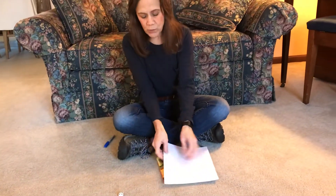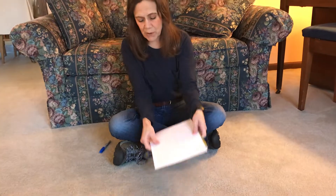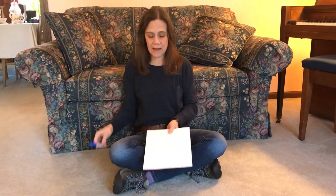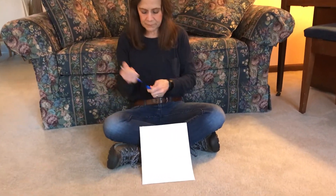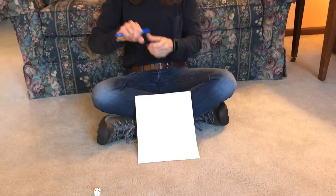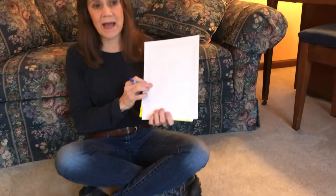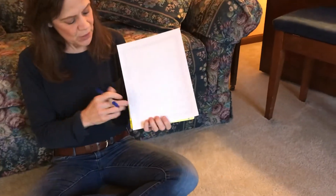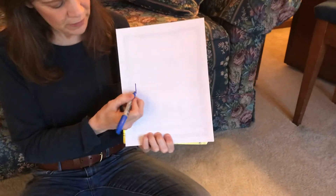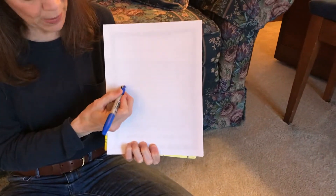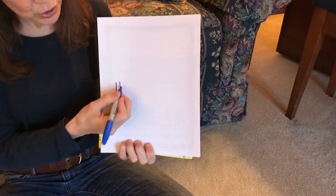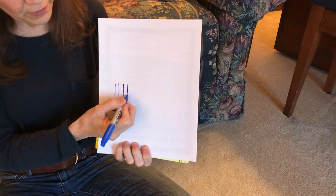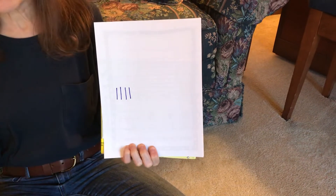And a new way that we're going to learn to represent numbers is by making tally marks. Tally marks are easy — all you do is put one tally mark for each number. So if you have the number four, you just make one, two, three, four marks.